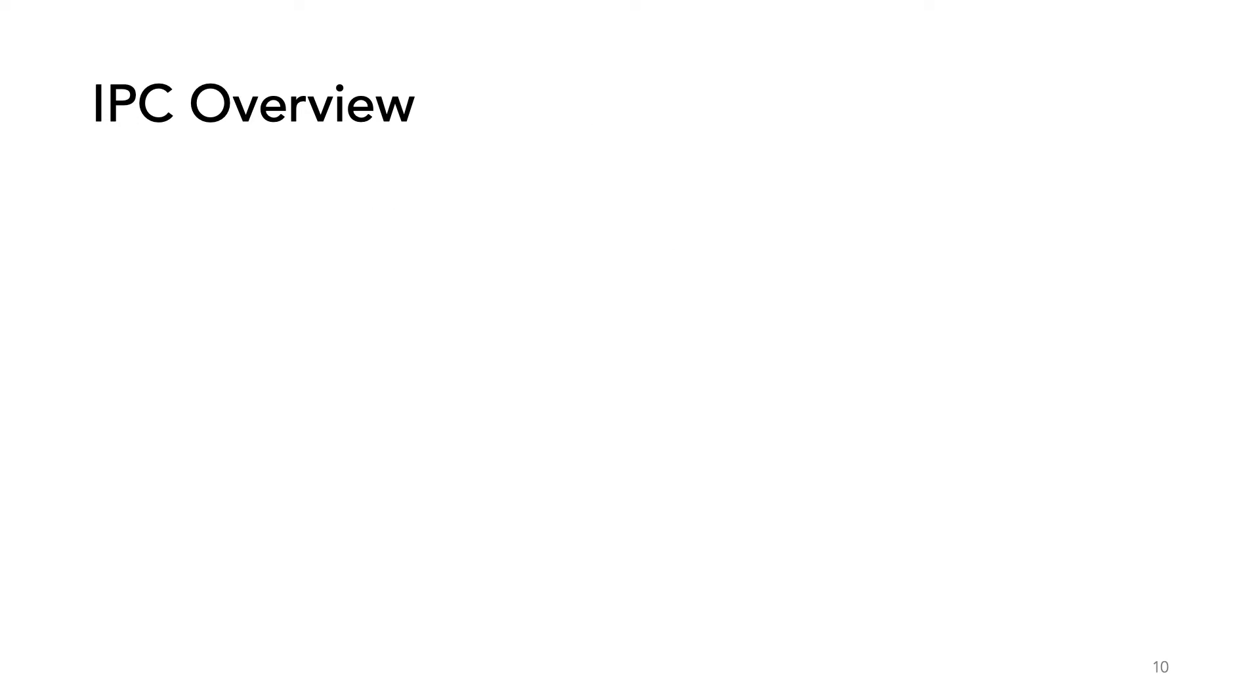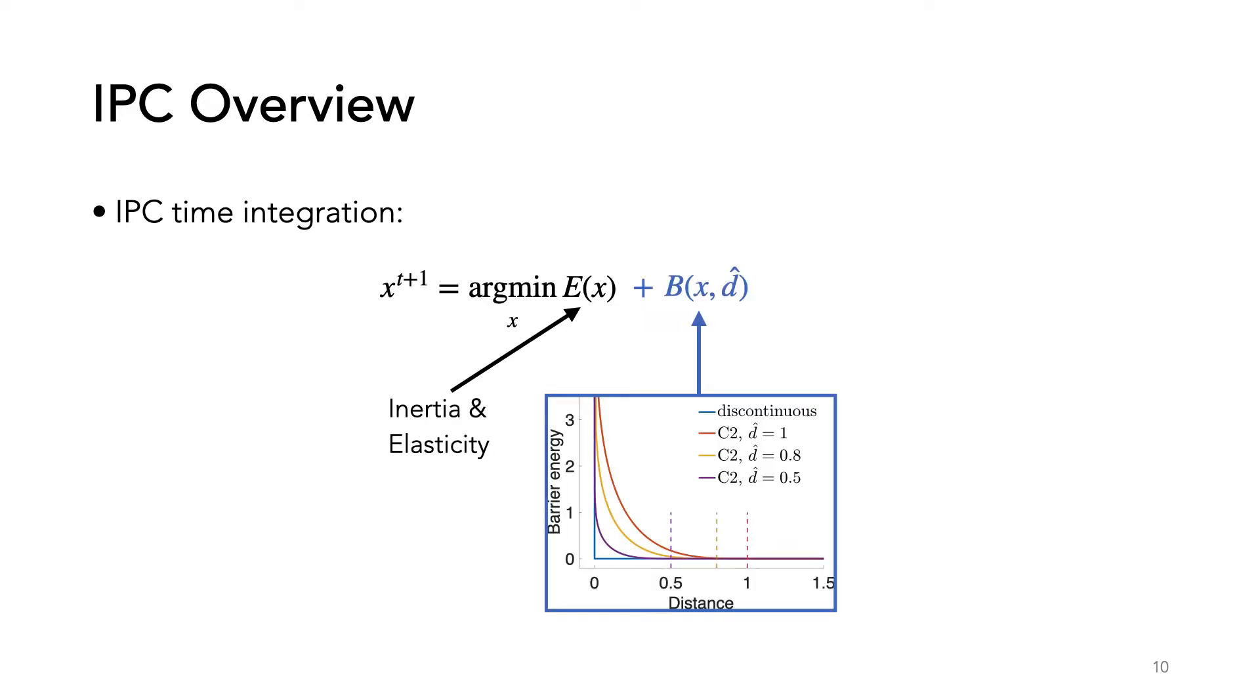The original IPC works by taking an incremental potential that encodes inertia and elasticity and adding on to it a barrier potential to handle contact. This barrier potential is a function that grows to infinity as the distance shrinks to zero. Additionally, it smoothly vanishes as the distance grows larger than a d-hat parameter. This ensures the distance is always greater than zero.